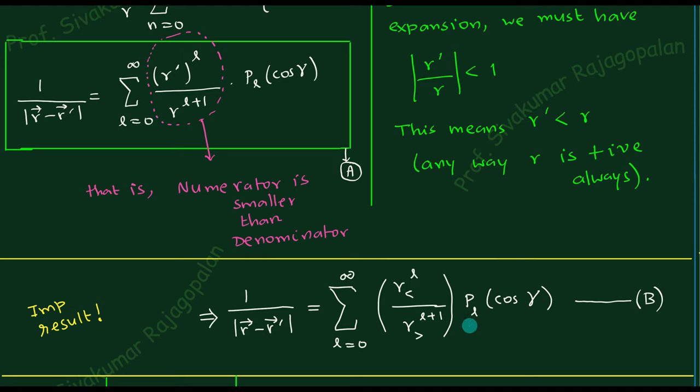The question naturally comes: what is the purpose of doing this? By making such an expansion, what do we gain, or what additional information do we learn about the electrostatic potential? The answer to that question is what we are going to see in today's class. Today's class is about how to manipulate 1/|r − r′| in order to understand the electrostatic potential due to charges.